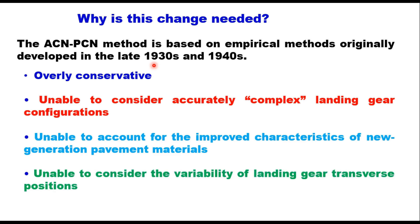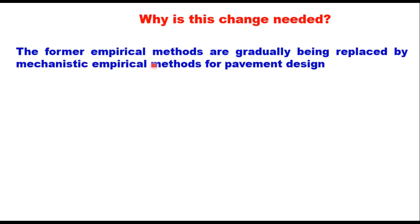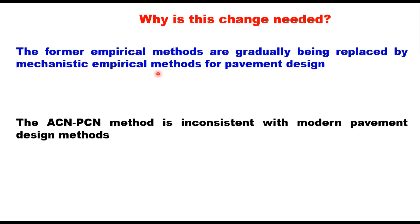The ACN/PCN method is also unable to account for the improved characteristics of new-generation pavement materials, and it cannot consider the variability of landing gear transverse positions of new aircraft. Furthermore, the former empirical methods of pavement design are gradually being replaced by mechanistic-empirical methods, making ACN/PCN inconsistent with modern pavement design — which is why the ACR/PCR method was developed by ICAO and implemented from November 2024.